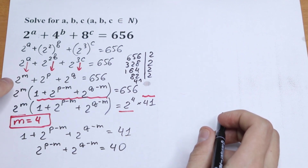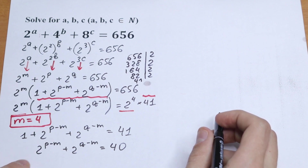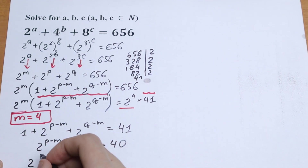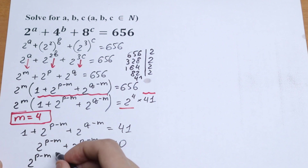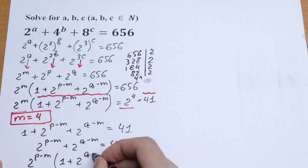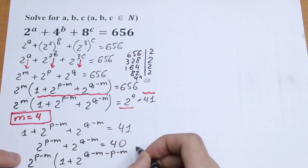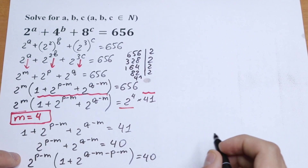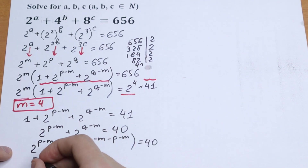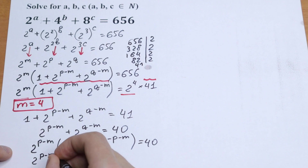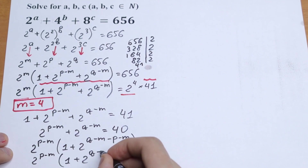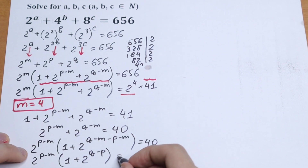Using the same logic, let's factor out 2 to the power (p minus m) from this expression. What we will have is: 2 to the power (p minus m), times the quantity 1 plus 2 to the power (q minus m minus p plus m), which simplifies to 1 plus 2 to the power (q minus p), equals 40.